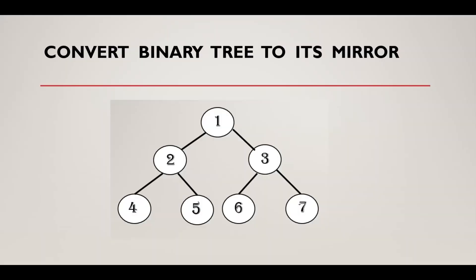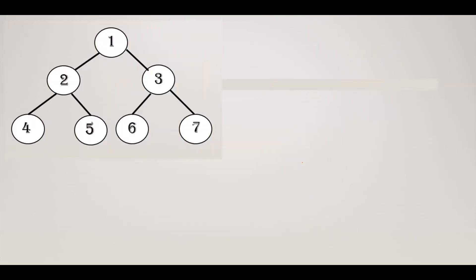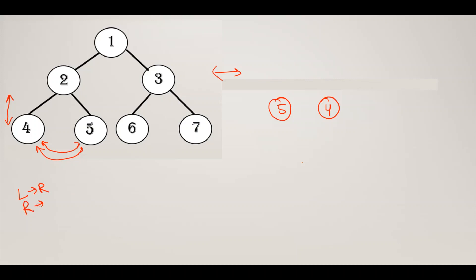Here I have a binary tree in front of my screen. Now if I want to have a mirror image of this binary tree, how can we have this? We will start from leaf to root. So first of all, we have 4, and these two nodes will get interchanged. I'll write 5 here and 4 there, as in a mirror image left turns to right and right turns to left.